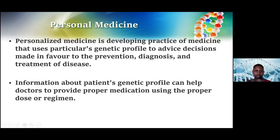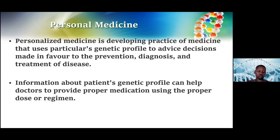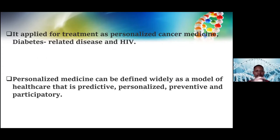Personalized medicine means we use the genetic profile of an individual to understand the type of prevention, diagnosis, and treatment to be given. Information about a patient's genetic profile can help the doctor provide proper medication using the proper dose. For example, two individuals with malaria may respond differently to the same drug, so two different drugs may be given for the same disease. We want to understand which drug fits a person according to their genetic makeup. This has been applied in cancer medicine, diabetes, and HIV treatment.